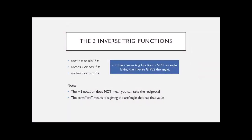There are basically only three inverse trig functions. Even though we have three basic trig functions — sine, cosine, and tangent — and then their reciprocals: cosecant, secant, and cotangent — when it comes to inverse trig functions, we only have three.